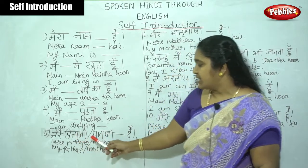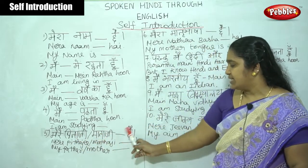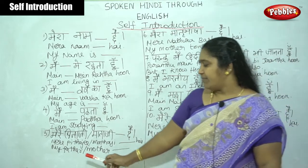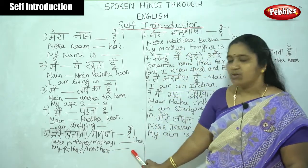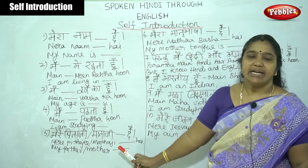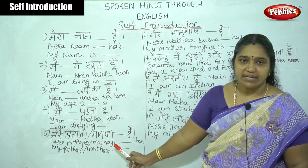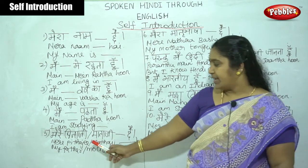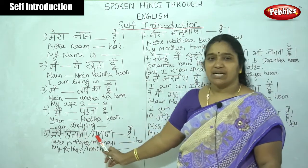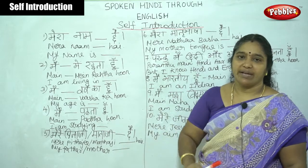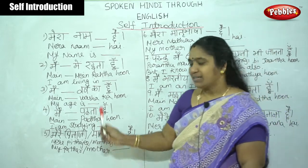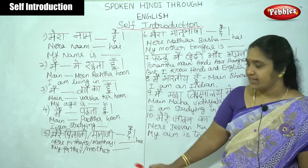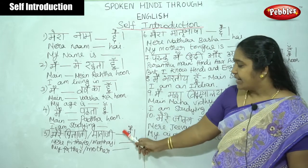For parents' names: 'Mere pitaji aur mataji dash hain' — my father and mother are dash. For example, 'Mere pitaji ka naam Shanmuham hai' and 'Mere mataji ka naam Sulochana hai.' Here we write the name of the father and the name of the mother.